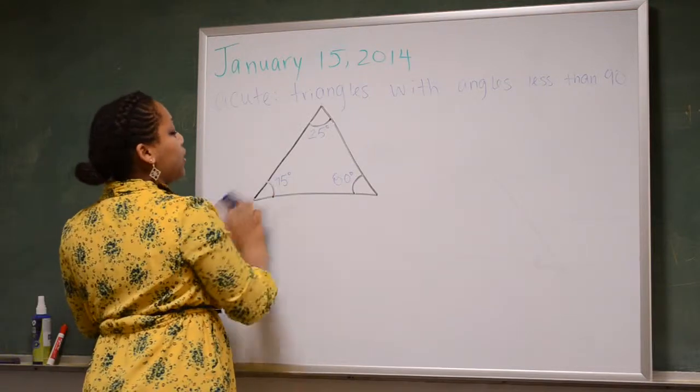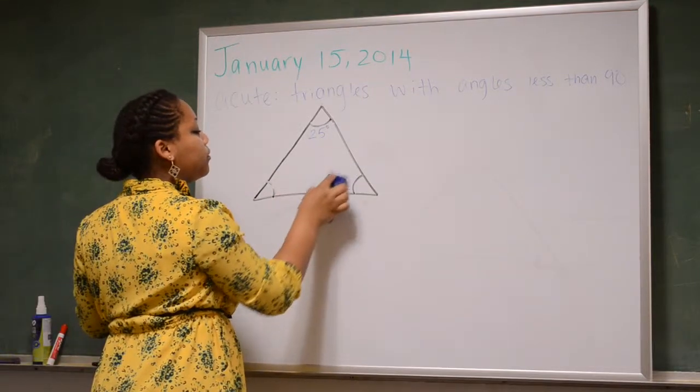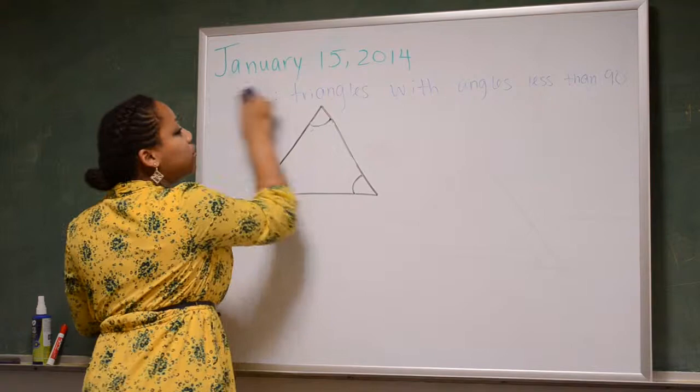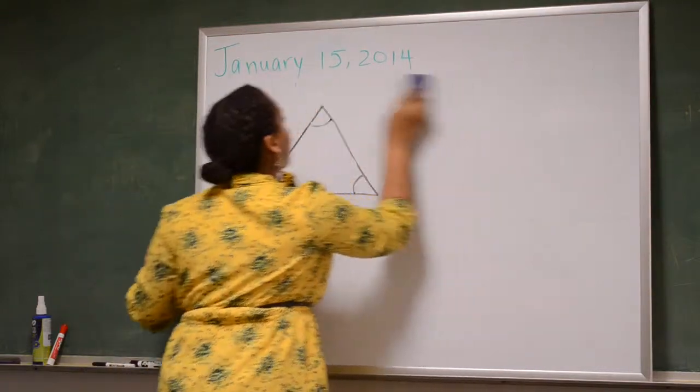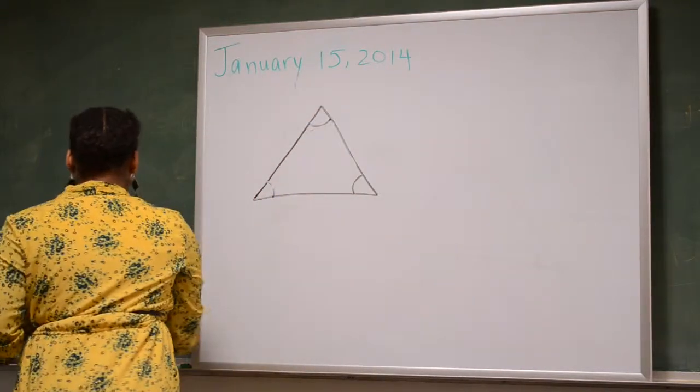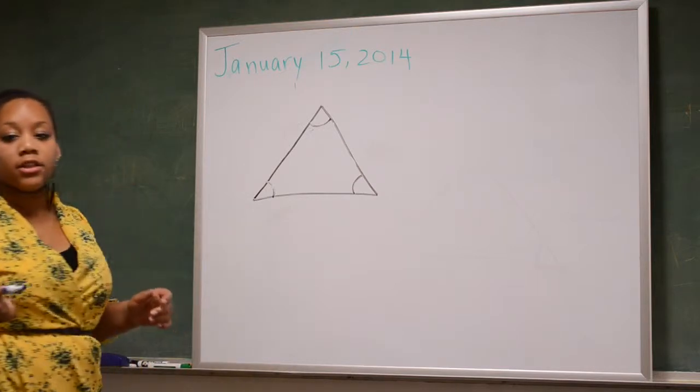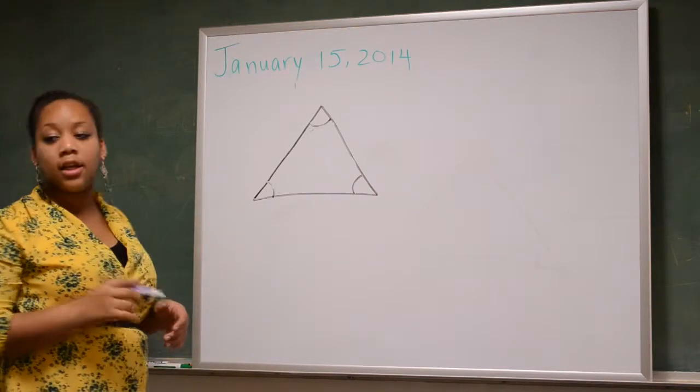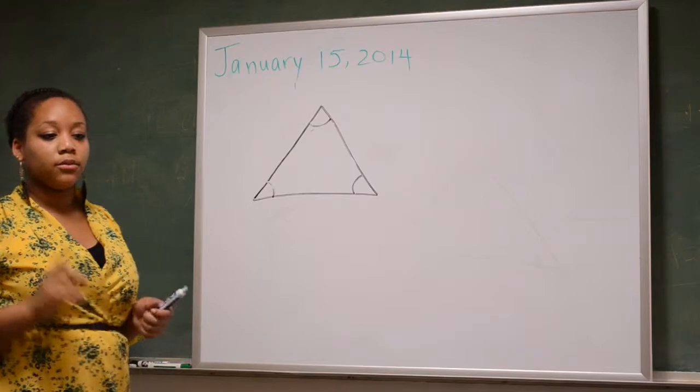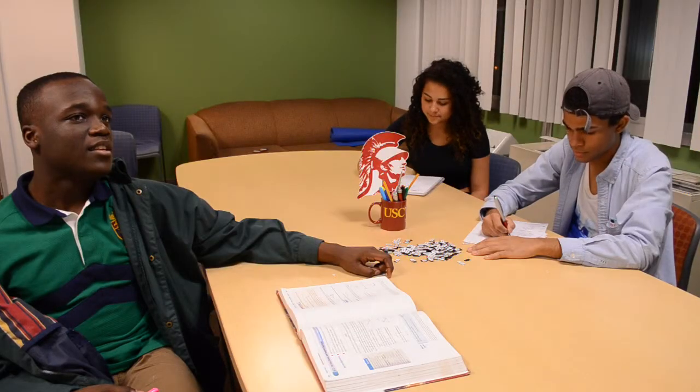Now, another type of triangle is an obtuse triangle. An obtuse triangle is a triangle where one of the angles in the triangle has an obtuse angle. Does anyone know what an obtuse angle is?